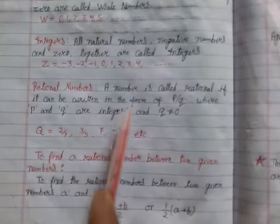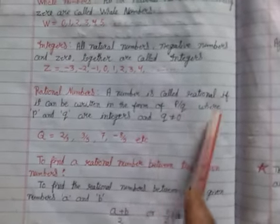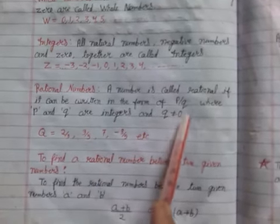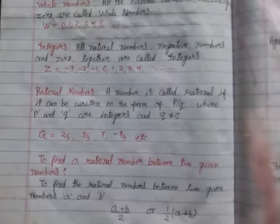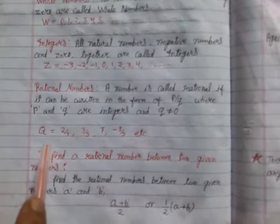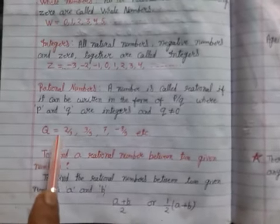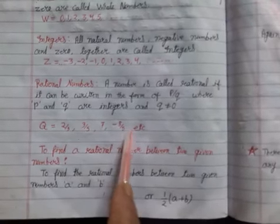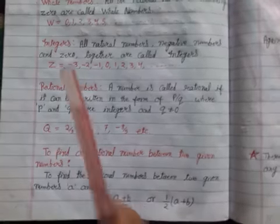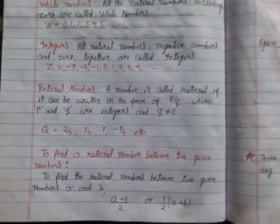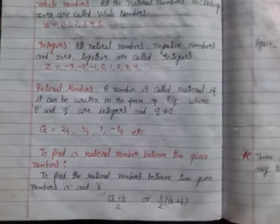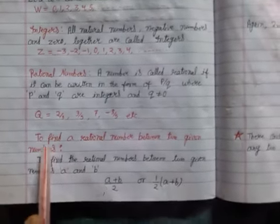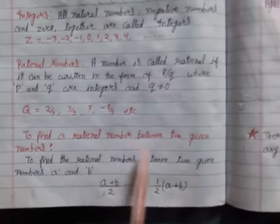Now what is a Rational Number? A number is called rational if it can be written in the form of p by q, where p and q are integers and q is not equal to zero. Q can never be zero. It is denoted by capital Q. Q equals 2 by 3, 3 by 5, 7, minus 8 by 5. In rational numbers, positive numbers, negative numbers, zero, and all fractions are included.